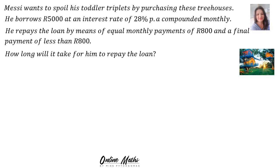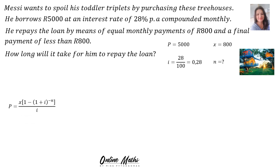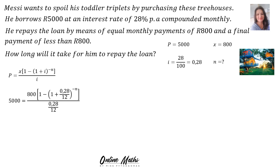Let's look at another example. Messi wants to spoil his toddler triplets by purchasing three houses. He borrows 5,000 Rand at an interest rate of 28% per annum compounded monthly. He repays the loan by means of equal monthly payments of 800 Rand and a final payment less than 800 Rand. How long will it take for him to repay the loan? Same procedure — we start with the summary. P is 5,000, X is 800, I is 0.28, and N is what we're looking for. Into the present value formula, we substitute.